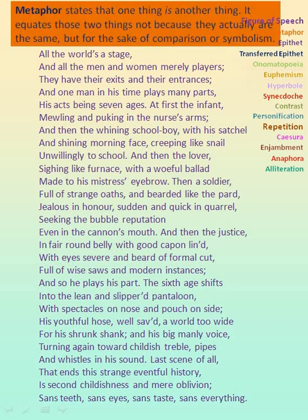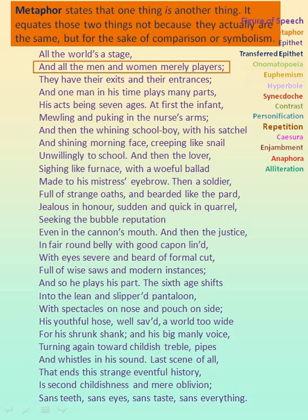The whole poem is in itself a symbolism, where the poet has made use of various symbols to represent ideas or qualities. The title itself has the poetic device metaphor. Metaphor is the comparison of two different things for the sake of comparison or symbolism. In the first line, 'All the World's a Stage' — the world is compared to a stage. Hence, it is metaphor. In the next line, the men and women are compared to the players who act on the stage. Hence, metaphor.